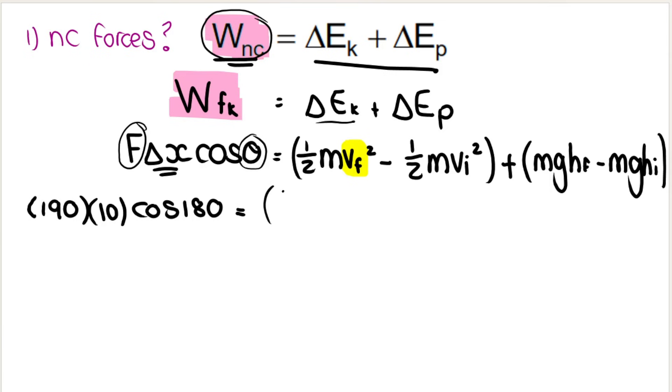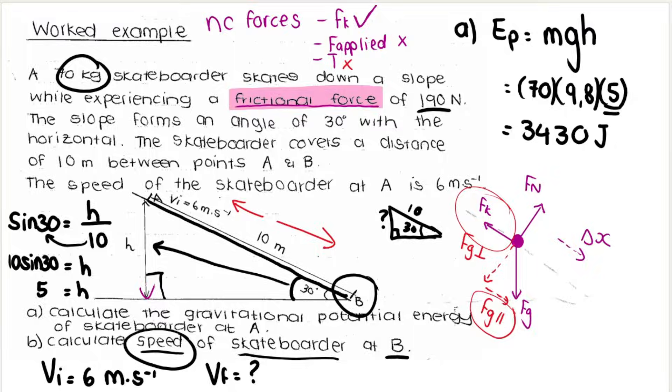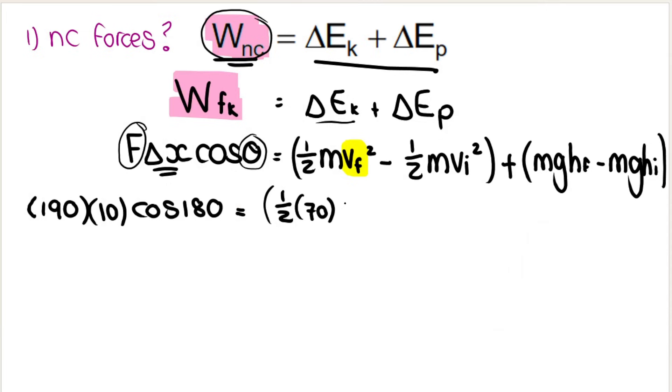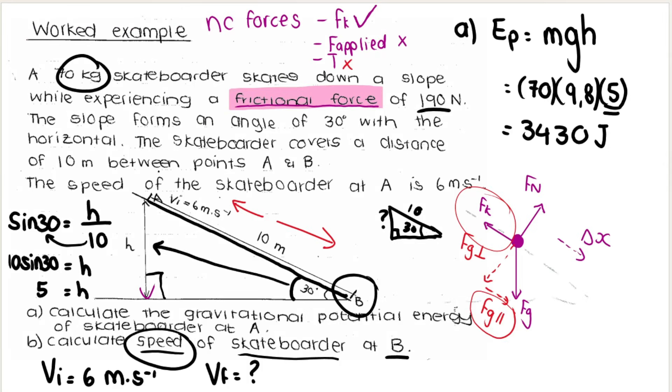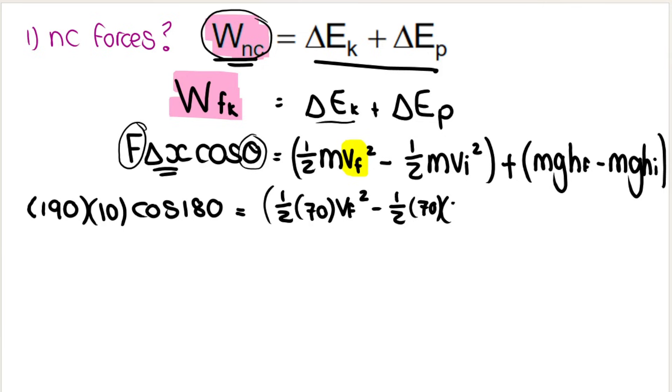Then half, what is the mass of the skateboarder? 70 kilograms. So half of 70. Remember we said we are looking for the final velocity. So we leave it. Then half, the mass again is 70. The initial velocity, that's the velocity at A, we said was 6. My initial velocity is 6. 6 squared plus,